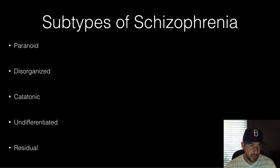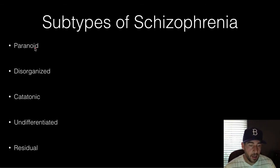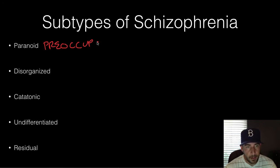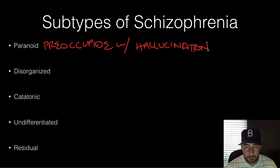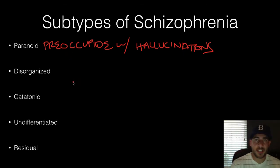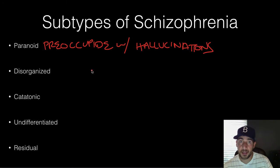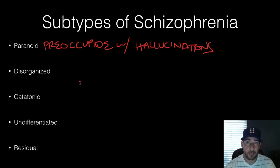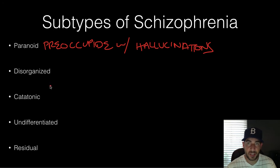There are different types of schizophrenia you should know. Paranoid schizophrenia is characterized by preoccupation with hallucinations. Those hallucinations often involve themes of persecution or grandiosity — they might think aliens are coming to attack them and they need to get out, or they might think they're a king. So paranoid schizophrenia is marked by hallucinations with themes of persecution or grandiosity.